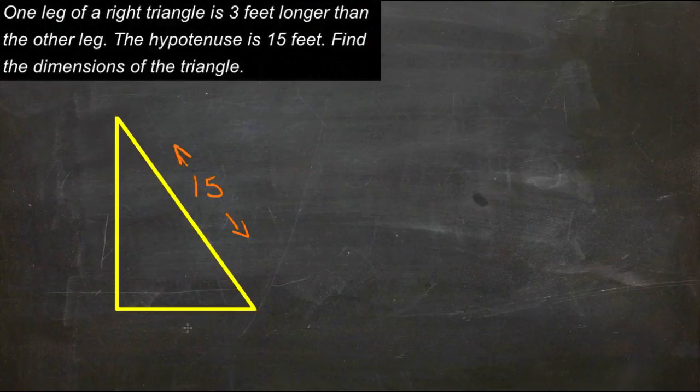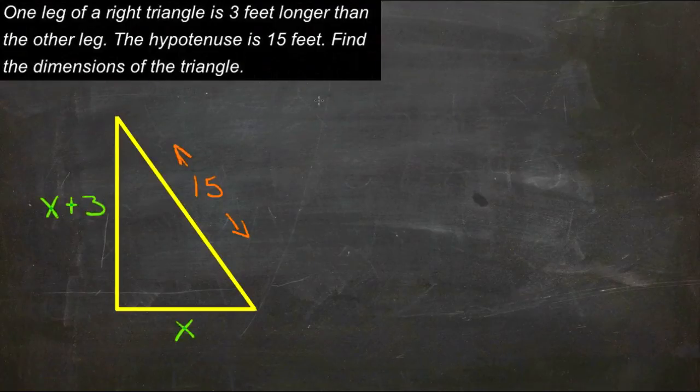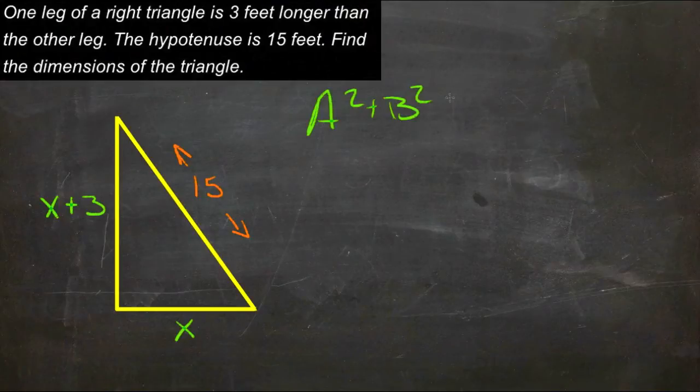The first thing we'll do is call our shorter leg just x, so the dimensions of that leg are x. If that's the case, then the longer one would be x plus 3 because it's three feet longer. Now we know the Pythagorean theorem: a squared plus b squared equals c squared.